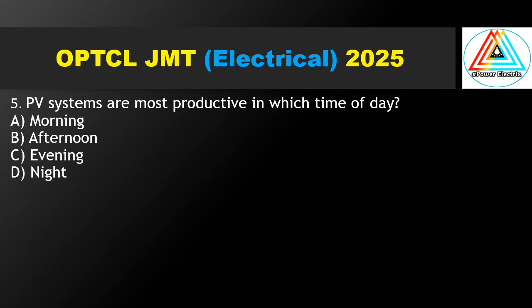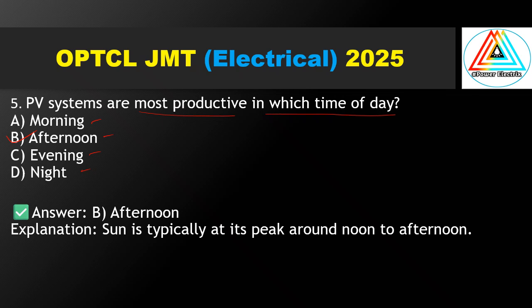Question No. 5: PV systems are most productive at which time of day — morning, afternoon, evening, or night? The correct answer is afternoon. PV systems typically peak around noon to afternoon.